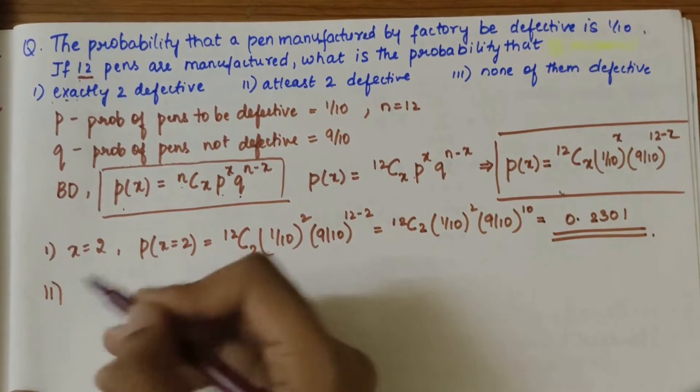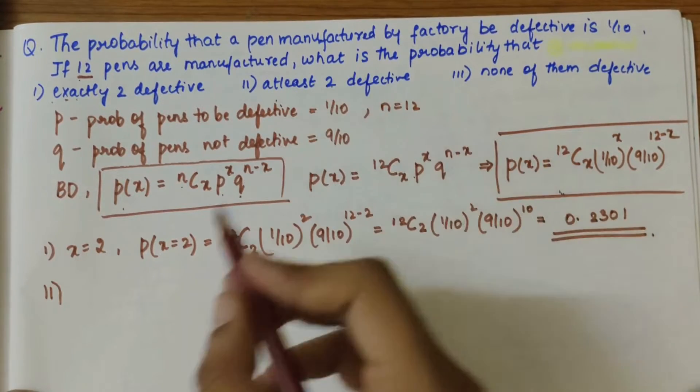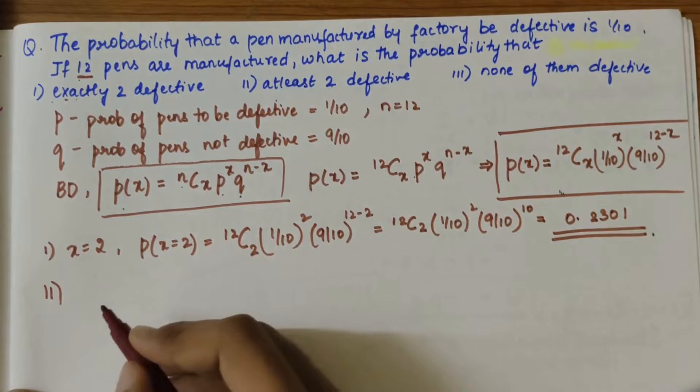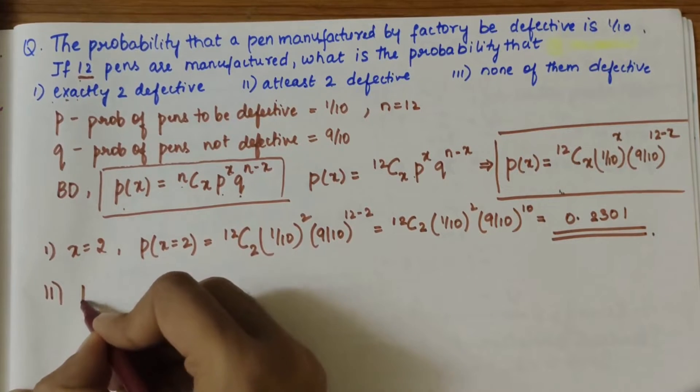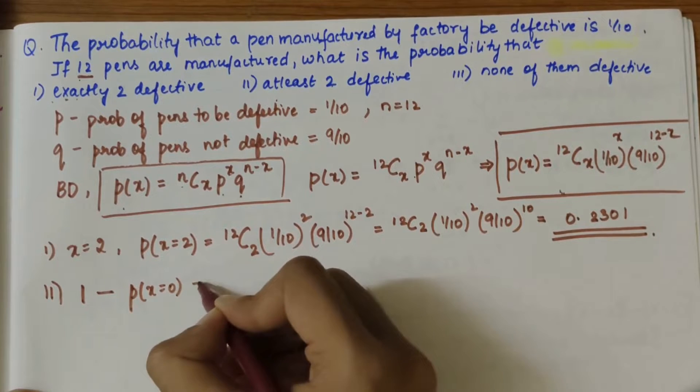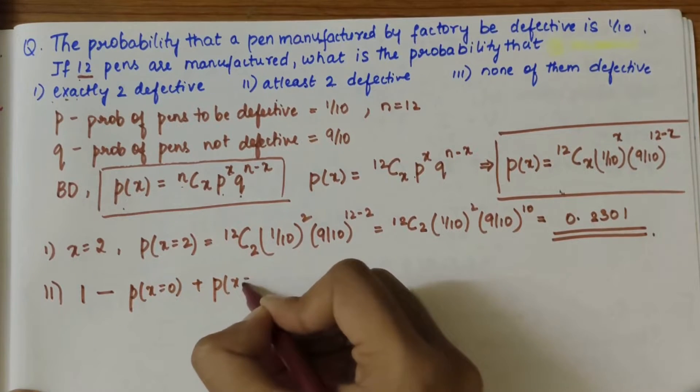The next part is at least two are defective. Probability of at least two pens are defective can be written as 1 minus P(X=0) plus P(X=1).